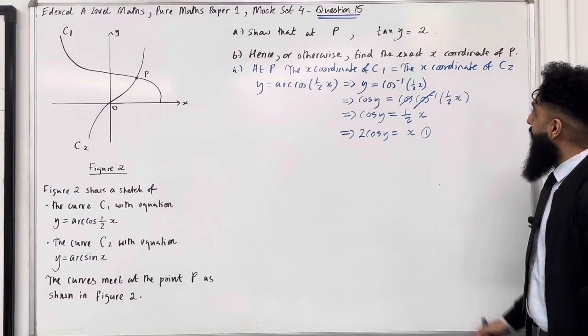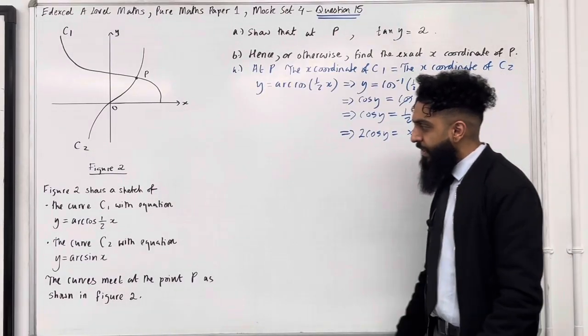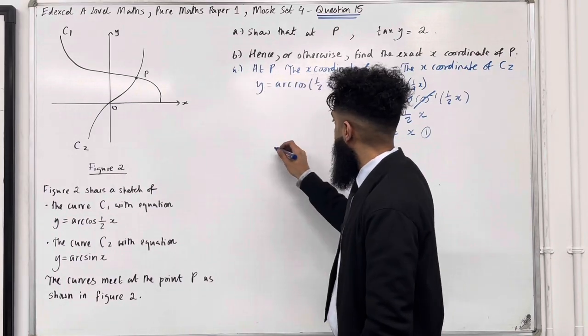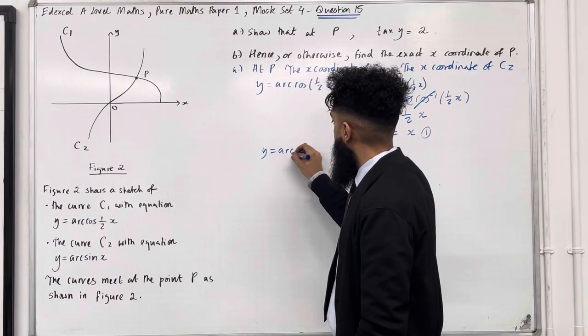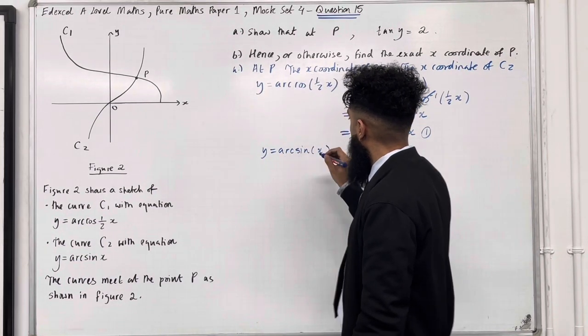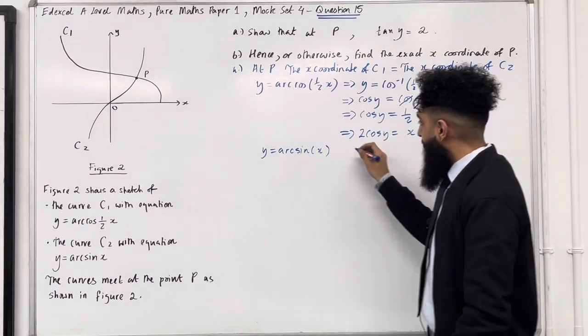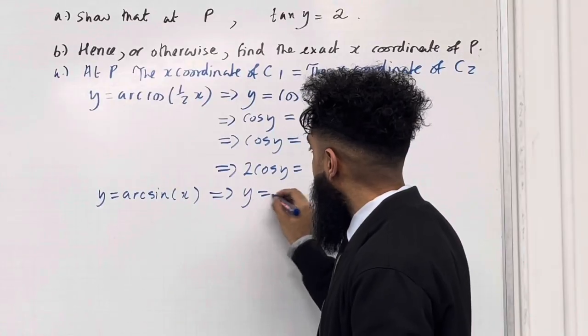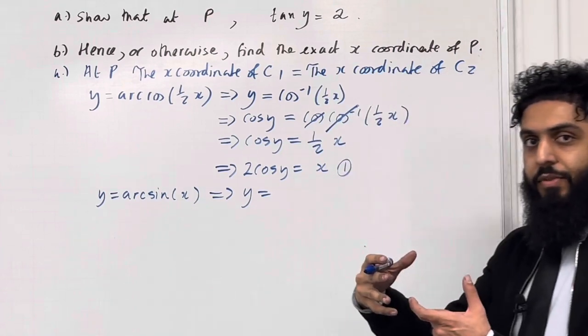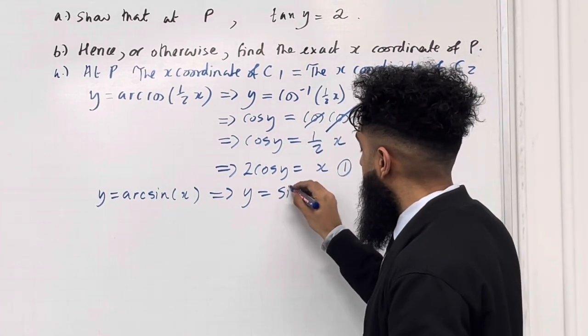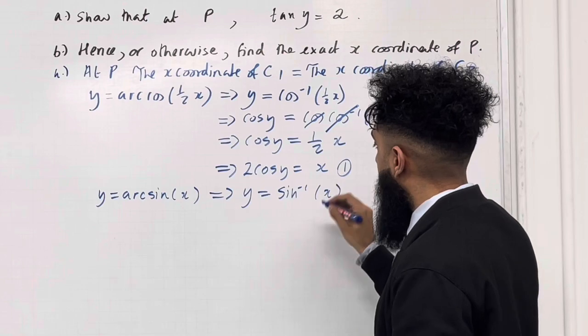Now, let's have a look at curve C2. So curve C2 has equation y = arcsin(x). So what I'm going to do now is make x the subject. This implies that y = sin⁻¹(x).